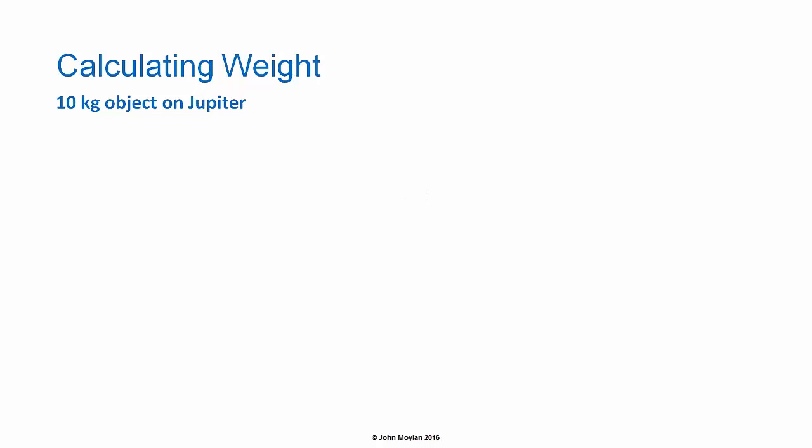To calculate the weight of the same object on the surface of Jupiter, we use the same formula F subscript g equals mg. The mass of the object is the same — 10 kilograms — but acceleration due to gravity on the surface of Jupiter is 24.8 meters per second squared, meaning that the weight of the object on the surface of Jupiter is 248 newtons.